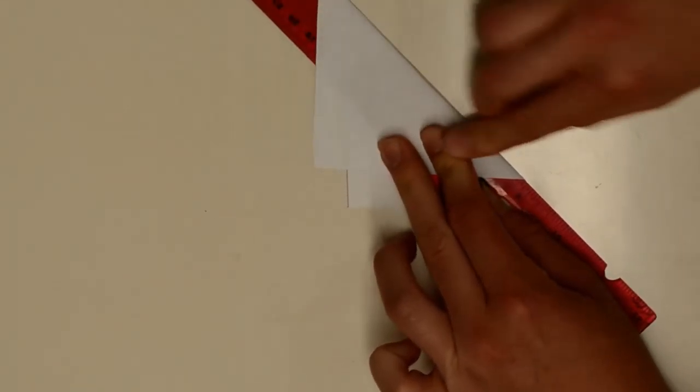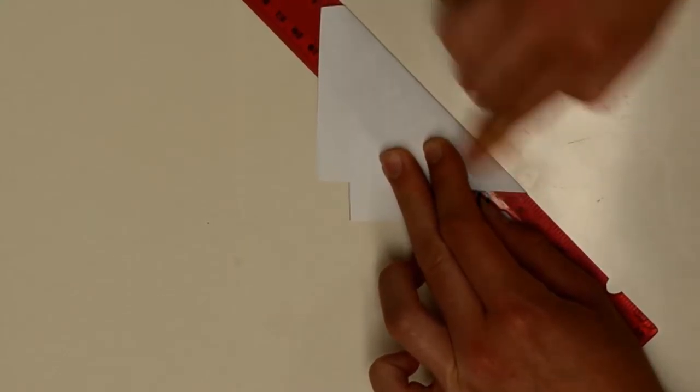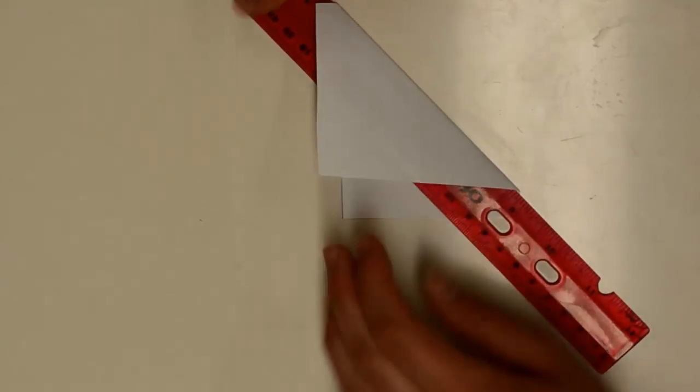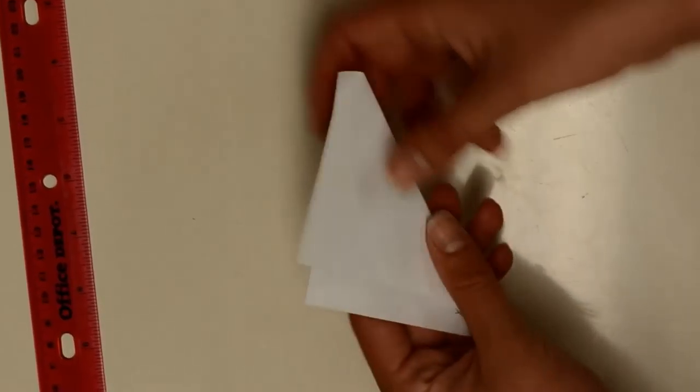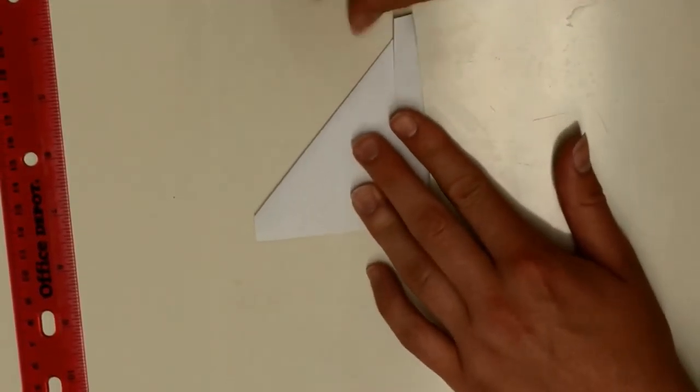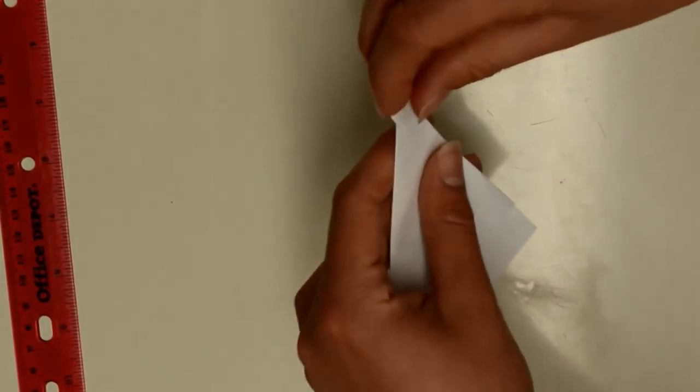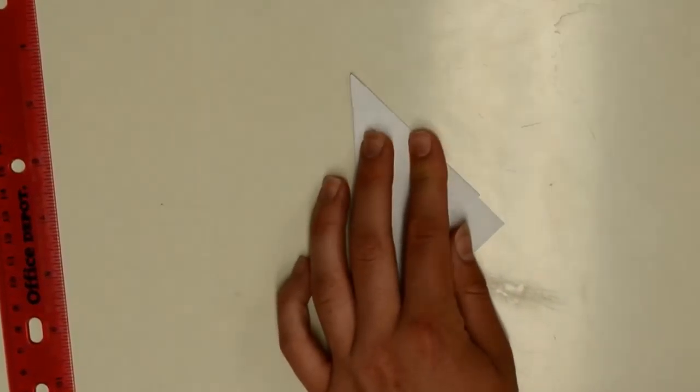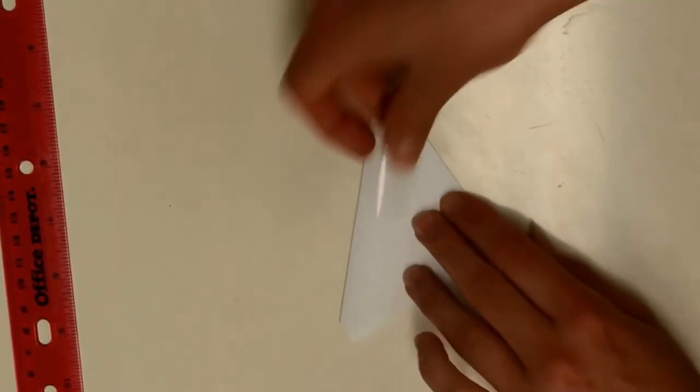Take off the ruler and fold one of the edges over the other half of the paper along with the little corner. Use a piece of tape to tape it down.